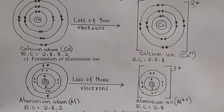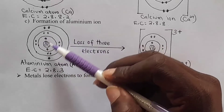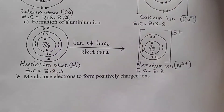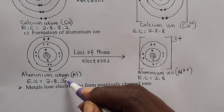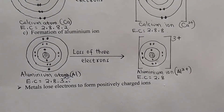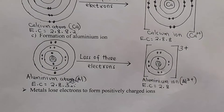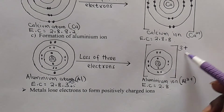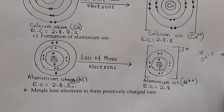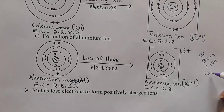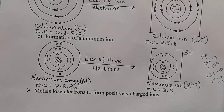Lastly, we have the formation of the aluminum ion. Aluminum is number 13, so its electron configuration is 2,8,3. Aluminum can become stable by losing three electrons or by gaining five. Losing three is better because it requires less energy. When it loses three electrons, we get an ion with electron configuration 2,8,8. The charge is 3+, because aluminum has 13 protons and loses 3 electrons leaving 10, so 13 minus 10 equals positive three.